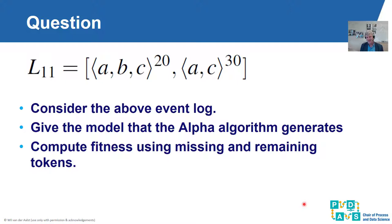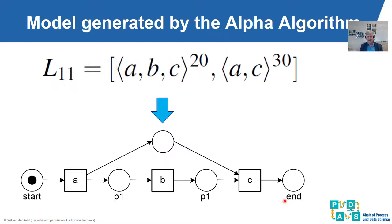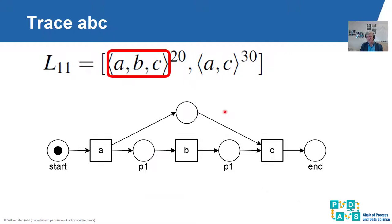Here is another end-to-end example — apply the alpha algorithm yourself and then check conformance and compute the fitness value. Applying the alpha algorithm, we see that it incorrectly models a skip by just adding another place. Although A and C are connected, it is still not possible to jump immediately from A to C, so the trace AC cannot be executed.